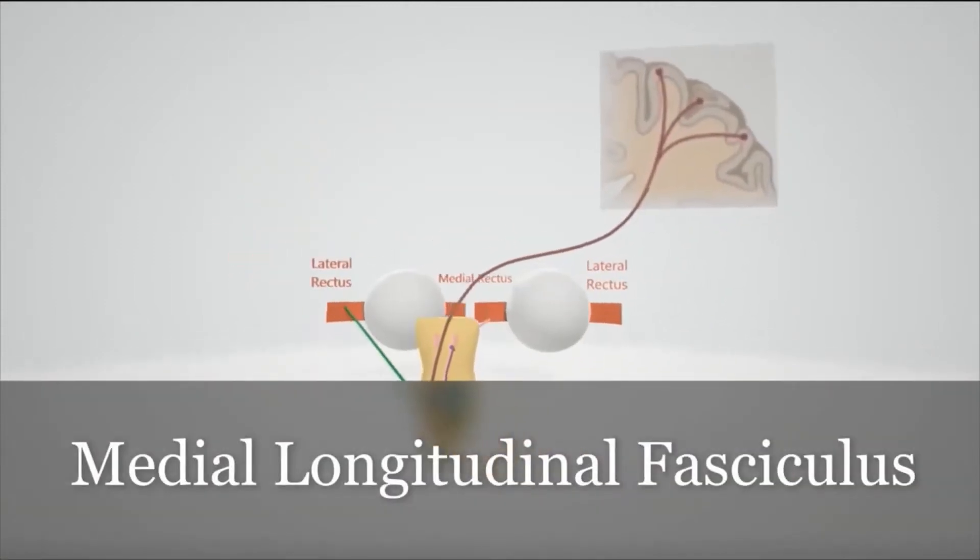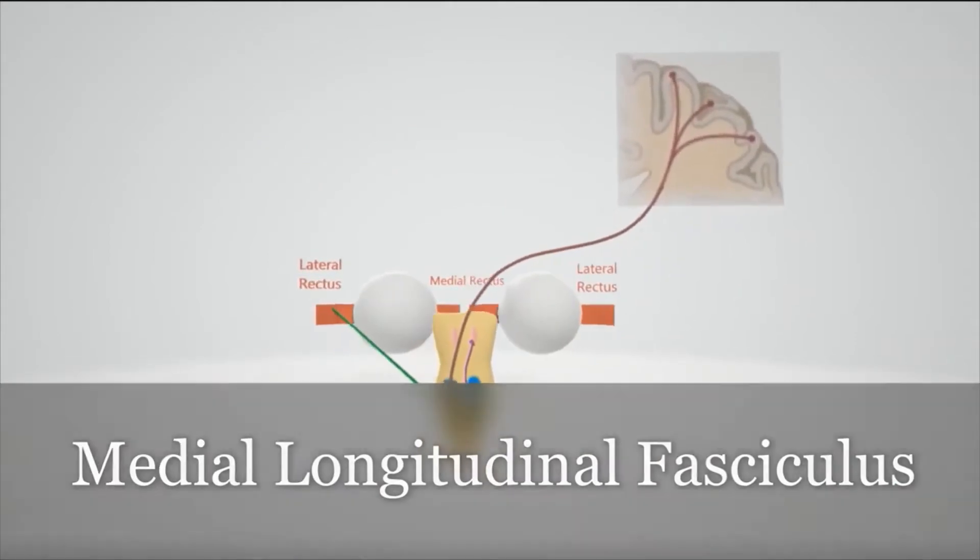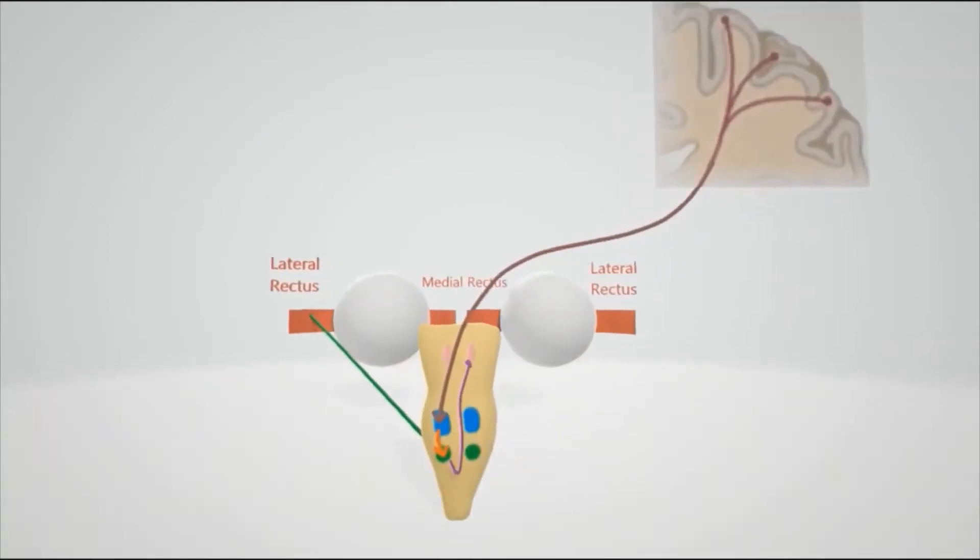Here we're going to talk about the medial longitudinal fasciculus. This allows communication between left and right eye when a person looks, let's say, to the left.